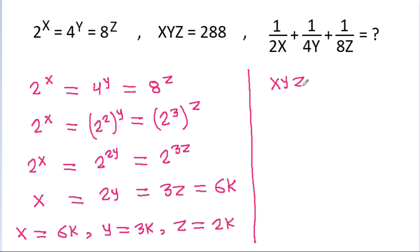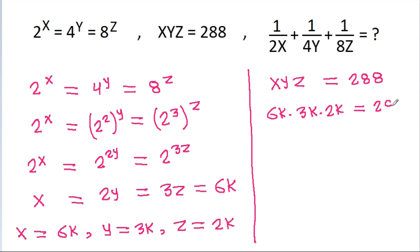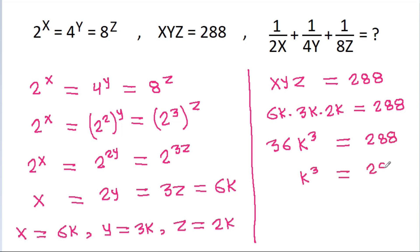So we have xyg is equal to 288, so x is 6k, y is 3k, and g is 2k, that gives 288. And 6 times 3 is 18, times 2 is 36k cubed equals 288. So k cubed will be equal to 288 divided by 36.